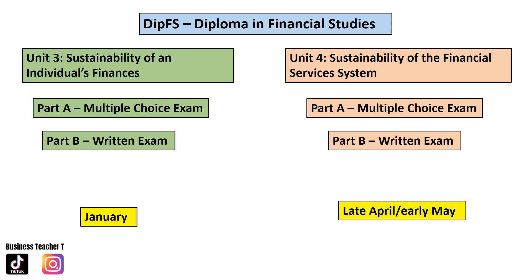For the Diploma you will study Unit 3, Sustainability of an Individual's Finances. You'll sit a Multiple Choice Exam — Part A and Part B, a written exam, in January. You will also have a resit opportunity in March for Unit 3, which you need to discuss with your teacher.